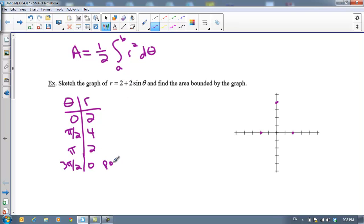This means we are at the pole. So at 3π/2, which is straight down, we are at the pole, or at the origin. And then if you plug in 2π, you get right back to 2 because 2π is the same thing as 0.